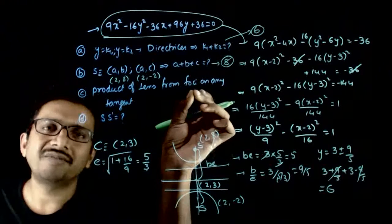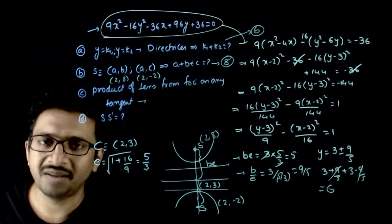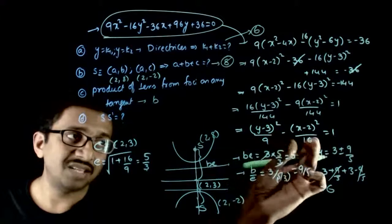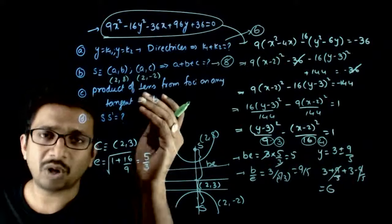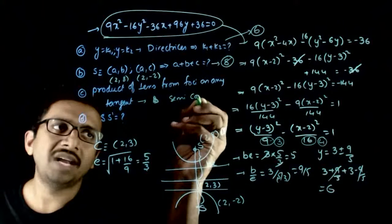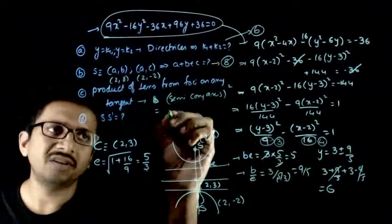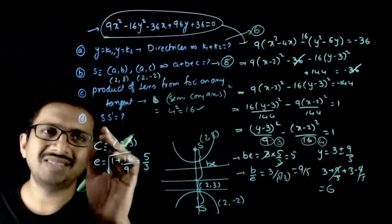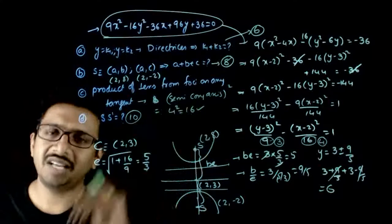The product of perpendiculars from foci on any tangent is a standard property: it equals the square of the semi-conjugate axis. The semi-transverse axis is 3 and the semi-conjugate axis is 4, so the product equals 4² = 16. The distance between the foci is 5 + 5 = 10. So the four answers are 6, 8, 16, and 10.